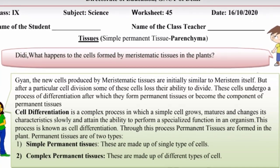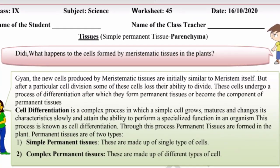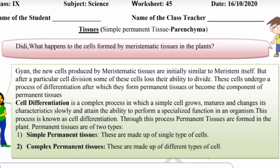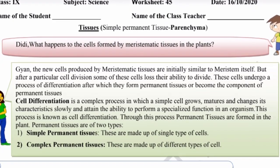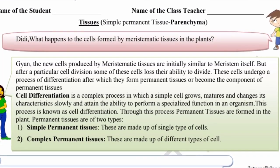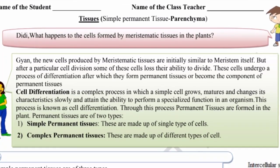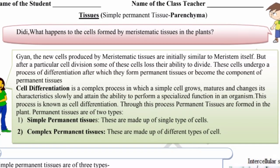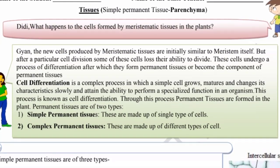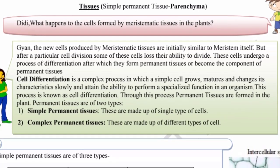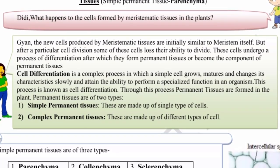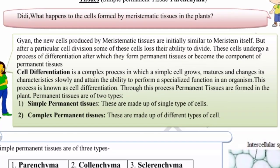What happened to the cell formed by meristematic tissue in the plant? The new cells produced by meristematic tissues are initially similar to the meristem itself. But after a particular cell division, some of these cells lose their ability to divide. These cells undergo a process of differentiation, after which they form permanent tissue and become the component of permanent tissue.